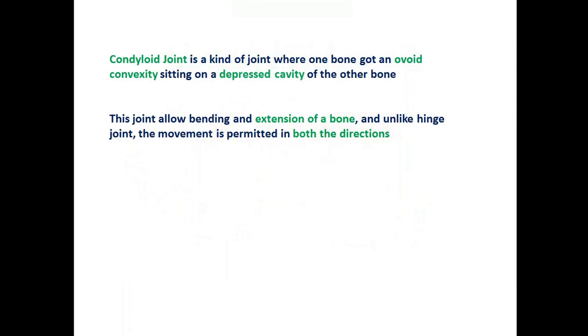A condyloid joint is a kind of joint where one bone has an ovoid convexity sitting on a depressed cavity of the other bone. This joint allows bending and extension of a bone, and unlike a hinge joint, the movement is permitted in both directions.